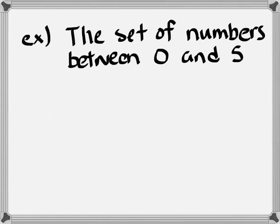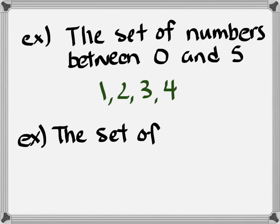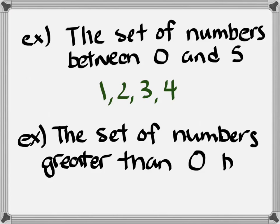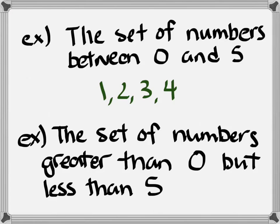Here's another example. I could say the set of numbers between 0 and 5. This is describing to you the following numbers 1, 2, 3, and 4. However, I can describe the set of numbers 1, 2, 3, and 4 in another way. For instance, I could say the set of numbers that are greater than 0 and less than 5. And again, this describes the same set 1, 2, 3, and 4.